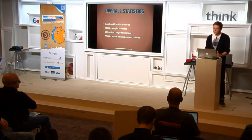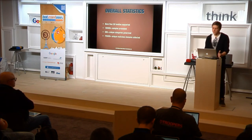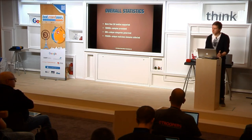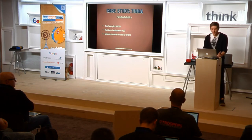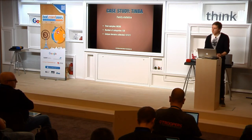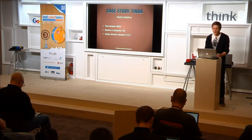Looking at DGA Lab's overall statistics: at the moment we support more than 28 distinctive families. DGA Lab has already processed more than 100,000 samples, 500-plus categories have been discovered, and we've collected more than 700,000 unique malicious domains divided by categories. For the well-known TINBA family specifically, we've processed more than 68,000 total samples, detected 120 unique categories, and collected more than 100,000 unique domains just for this family.